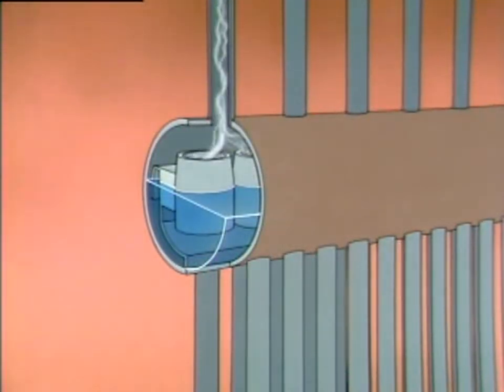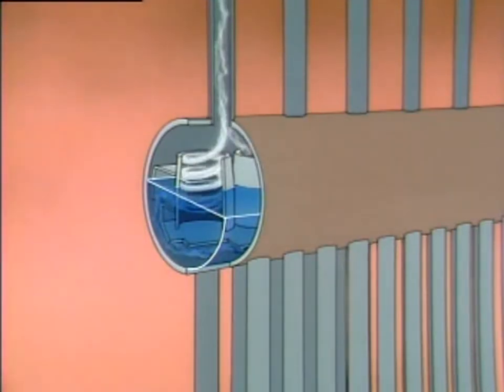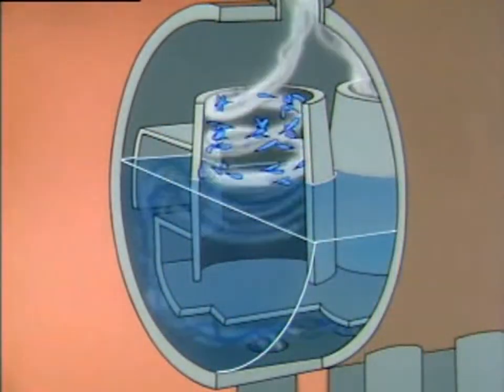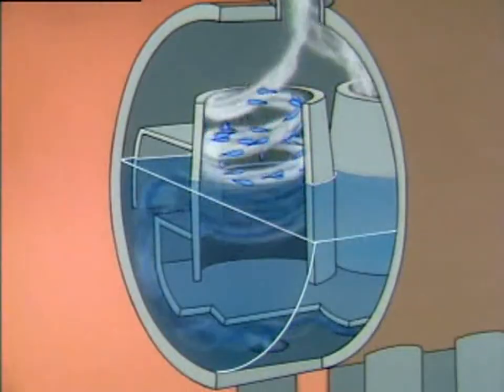The steam produced by a boiler generally contains some moisture. Some plant processes require relatively dry steam, so the moisture could be a problem. To prevent equipment damage from moisture, some boilers are equipped with moisture separators, devices that remove moisture from steam before it's sent to the plant. One type of moisture separator is a centrifugal separator or cyclone separator located in the steam drum. It works by directing the steam-water mixture into a circular chamber. The circular shape causes the mixture to swirl around, creating a centrifugal force that flings moisture droplets against the chamber walls. The droplets then run back into the drum, while the lighter steam flows out the top of the chamber.